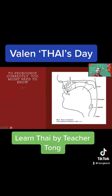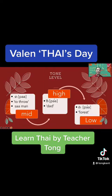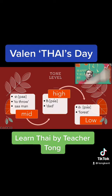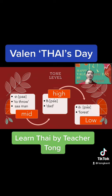To pronounce correctly, you may need to know this articulation. There are two kinds of tones in Thai. First is called level sound and the second is the contour sound. For the level sound there is the middle sound, like the word 'paa' — 'paa' means to throw something. This sound is called Saman.